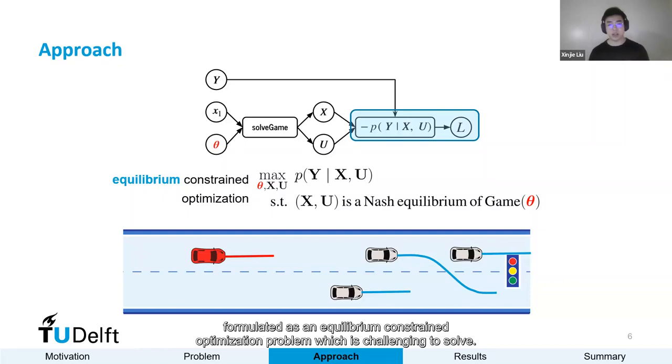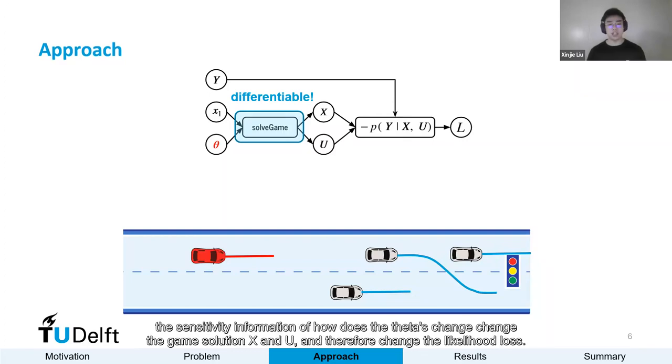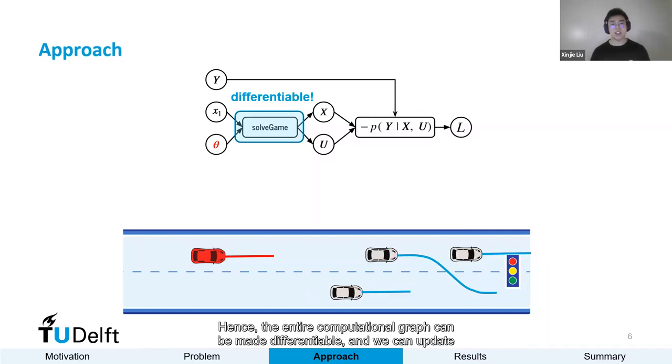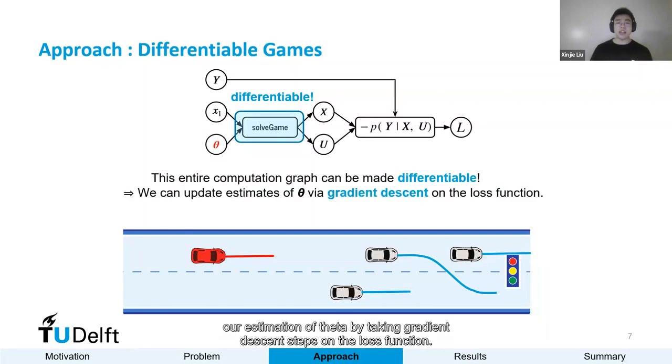The key insight we rely on in this work is that the game solver can be made differentiable, meaning that we can derive the sensitivity information of how the theta change changes the game solution x and u, and therefore change the likelihood loss. Hence, the entire computational graph can be made differentiable, and we can update our estimation of theta by taking gradient descent steps on the loss function.